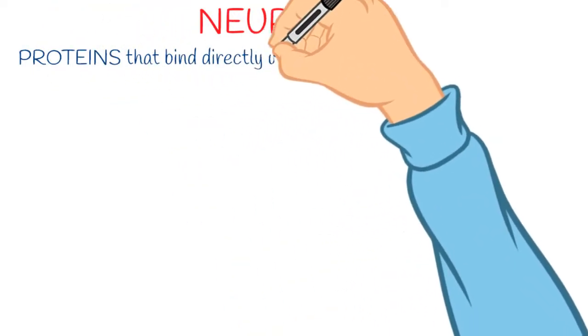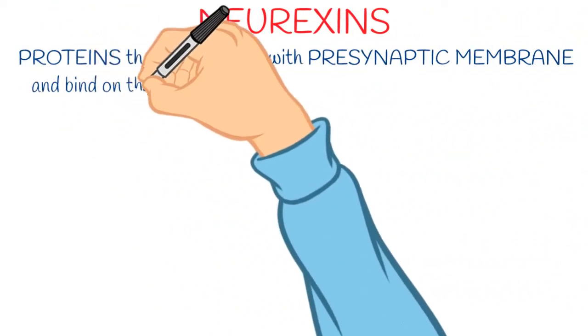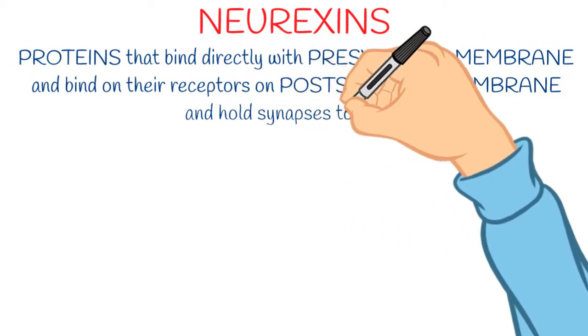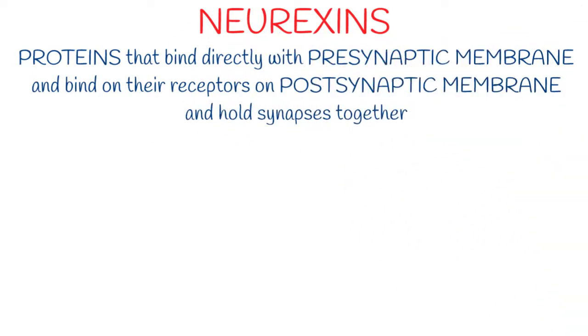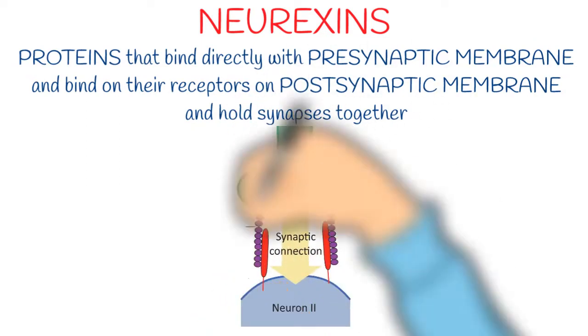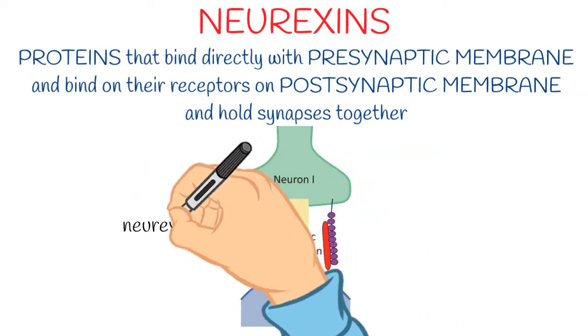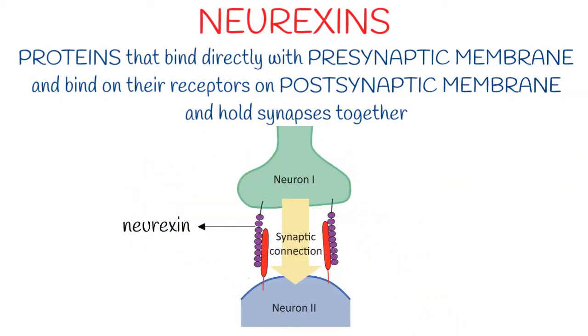Now there is one more important thing we should know: neurexins. Simply, they are proteins that are directly connected to the pre-synaptic membrane and attached to the post-synaptic membrane through receptors, and that's how they hold the synapse together. These purple beaded-like structures are neurexins. Here you can see they are in direct contact with neuron one, that is the pre-synaptic neuron, and attached with neuron two, that is the post-synaptic neuron, with red cylindrical structures which are receptors for neurexins.